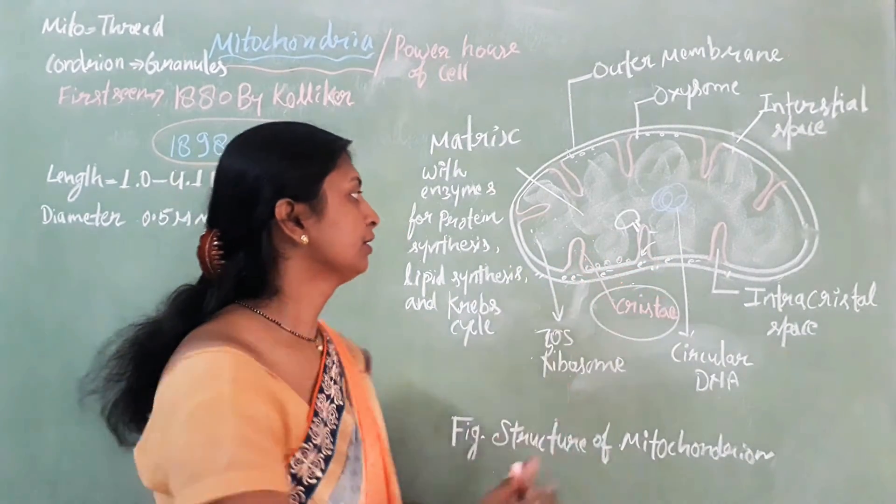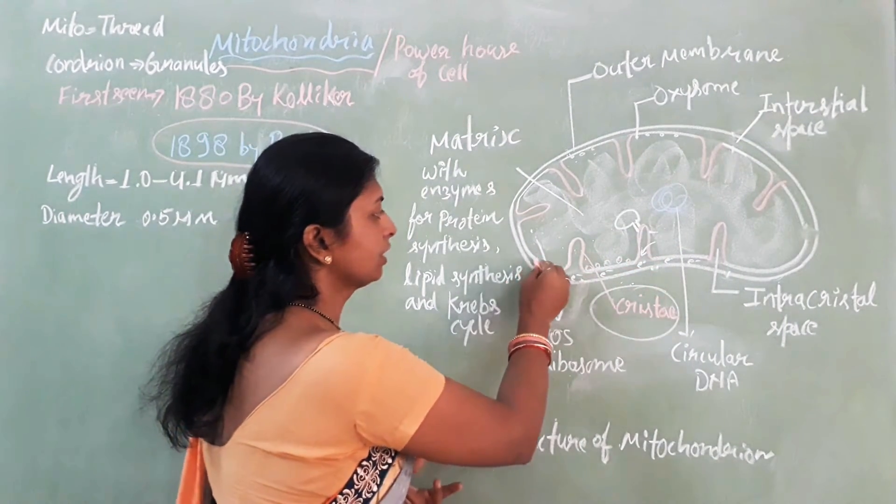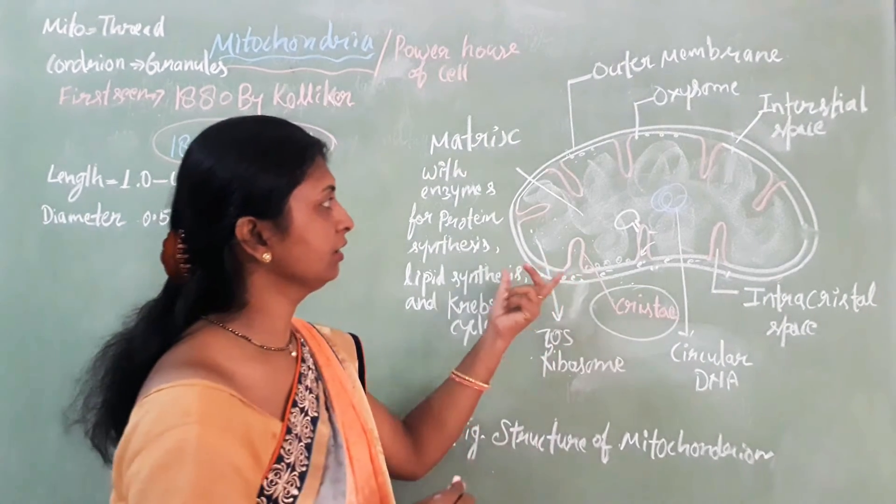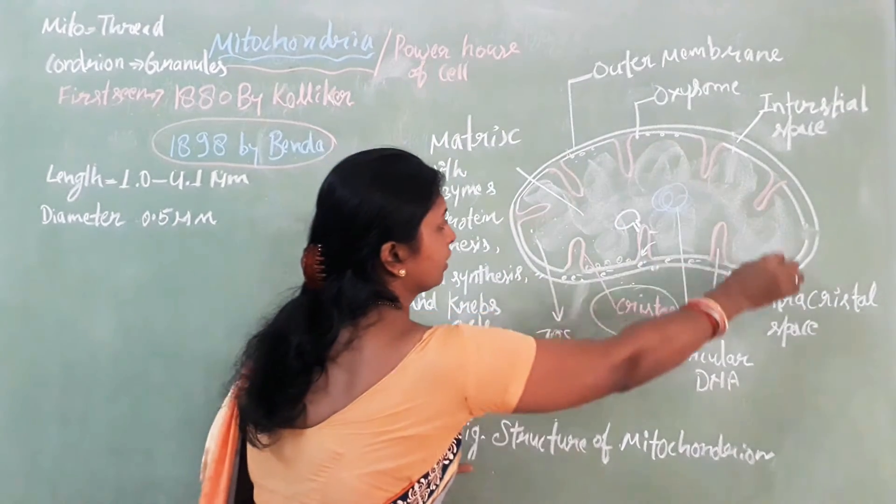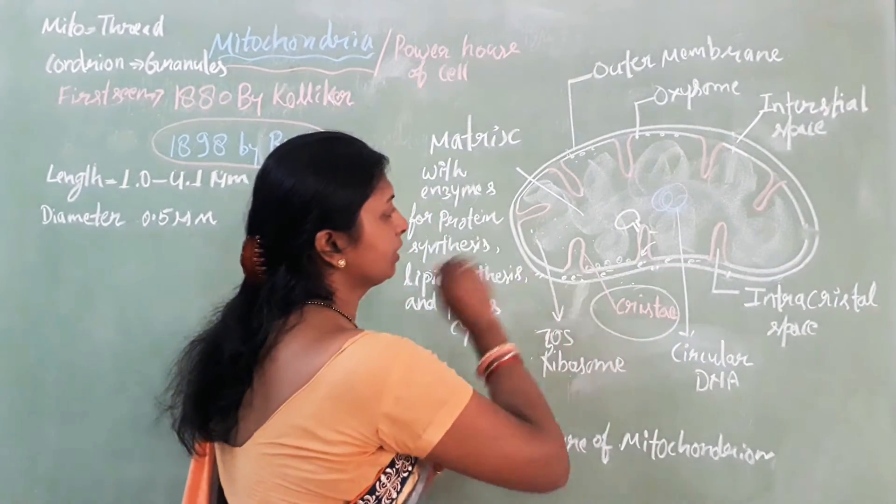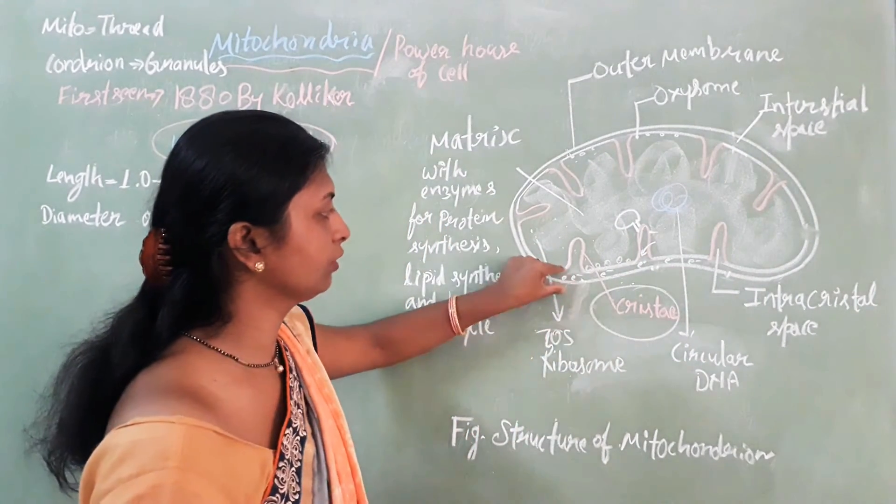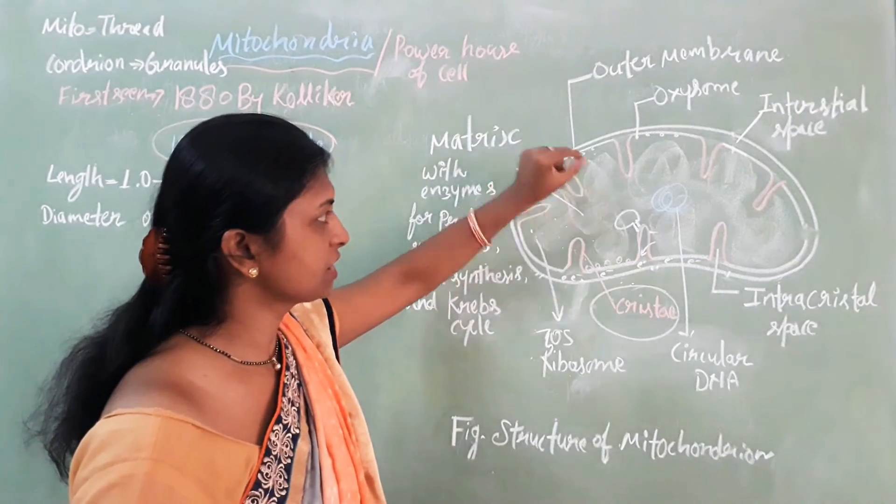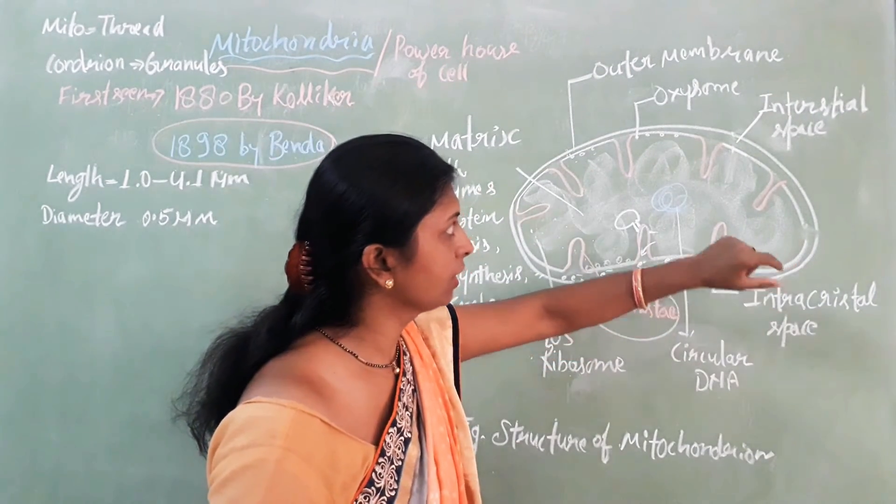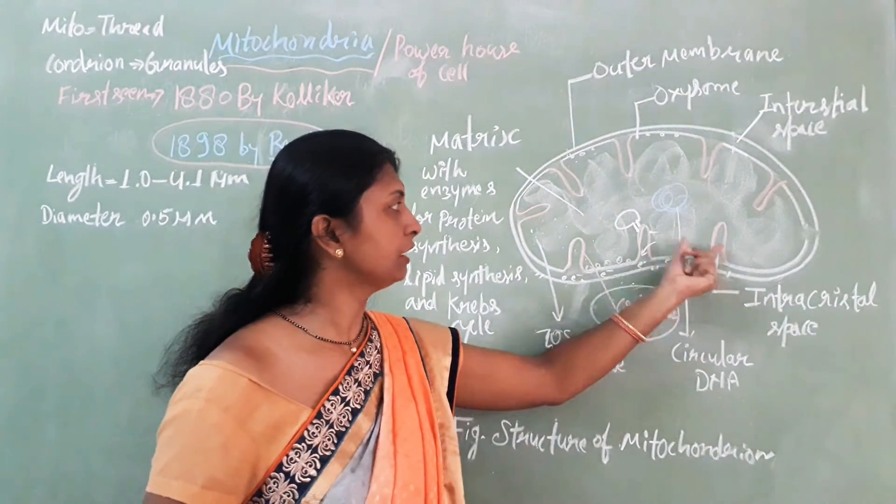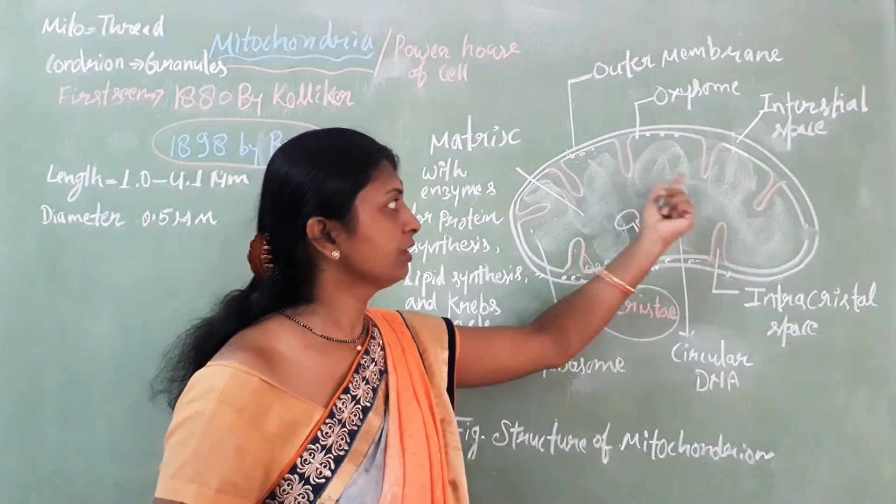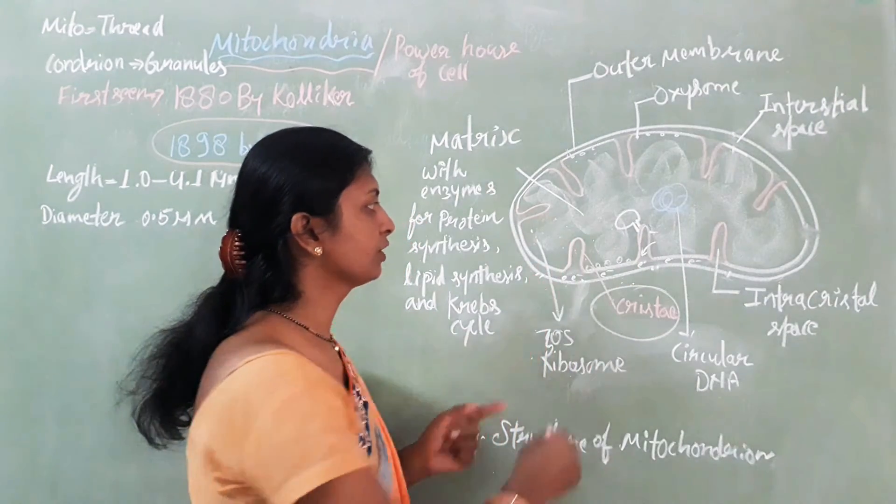Double membrane structures are present in mitochondria. The outer membrane surrounds it and the inner membrane is also present. Between the two membranes, one space is present known as the intermembrane space. The inner membrane has foldings inside it named cristae.